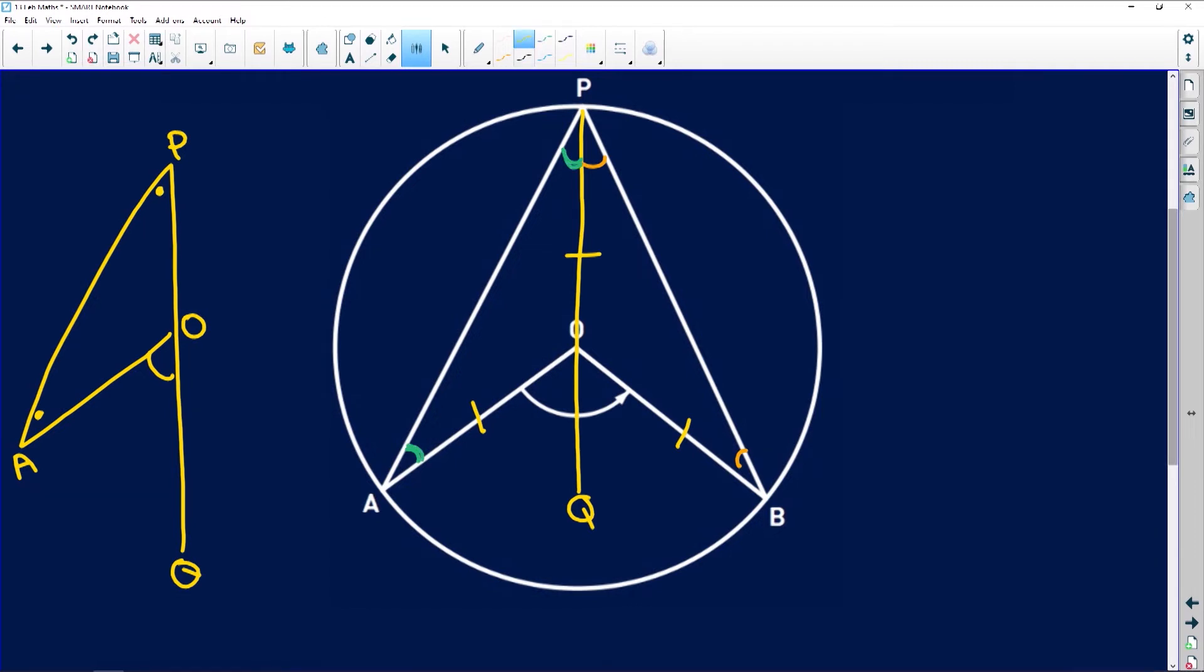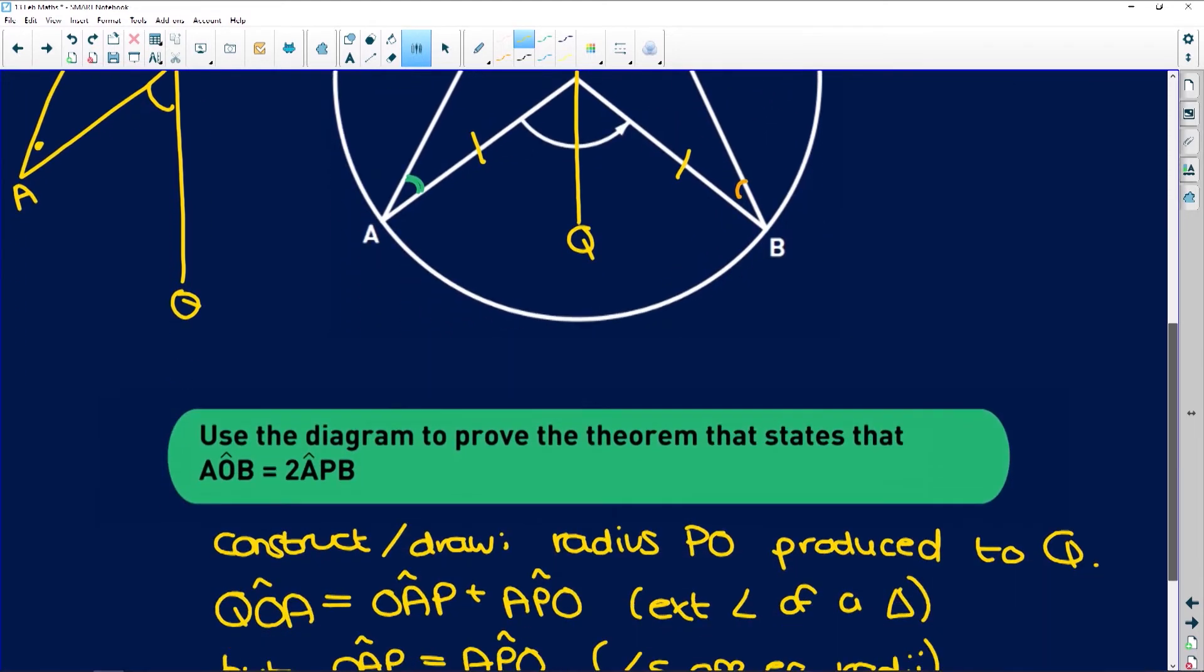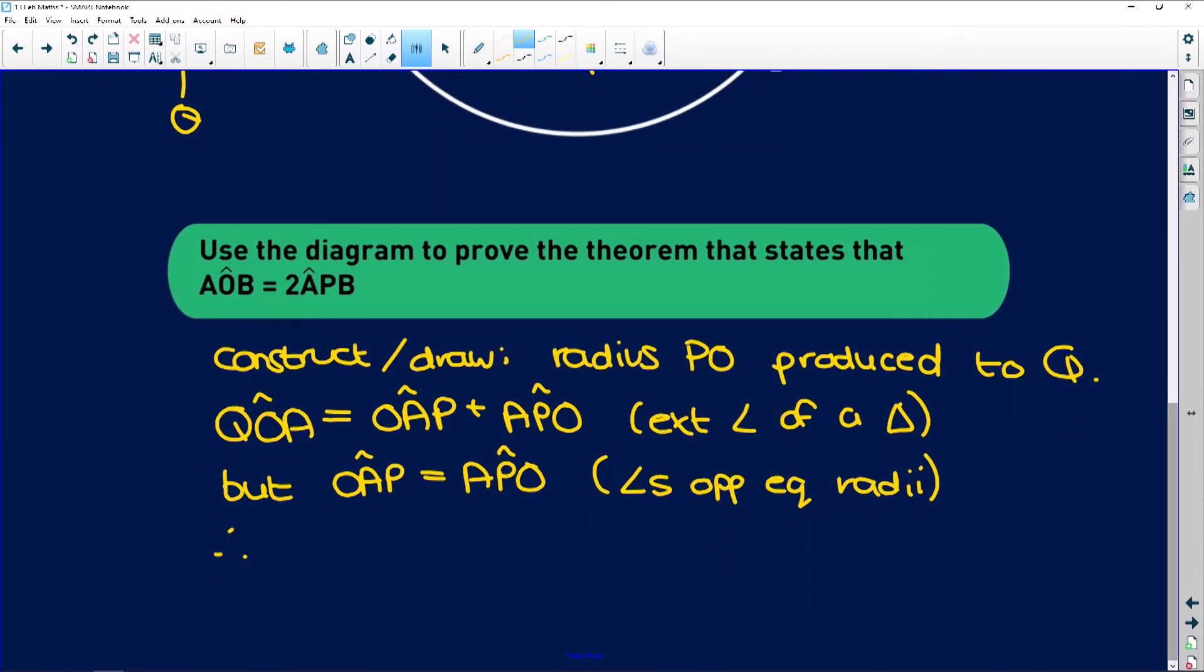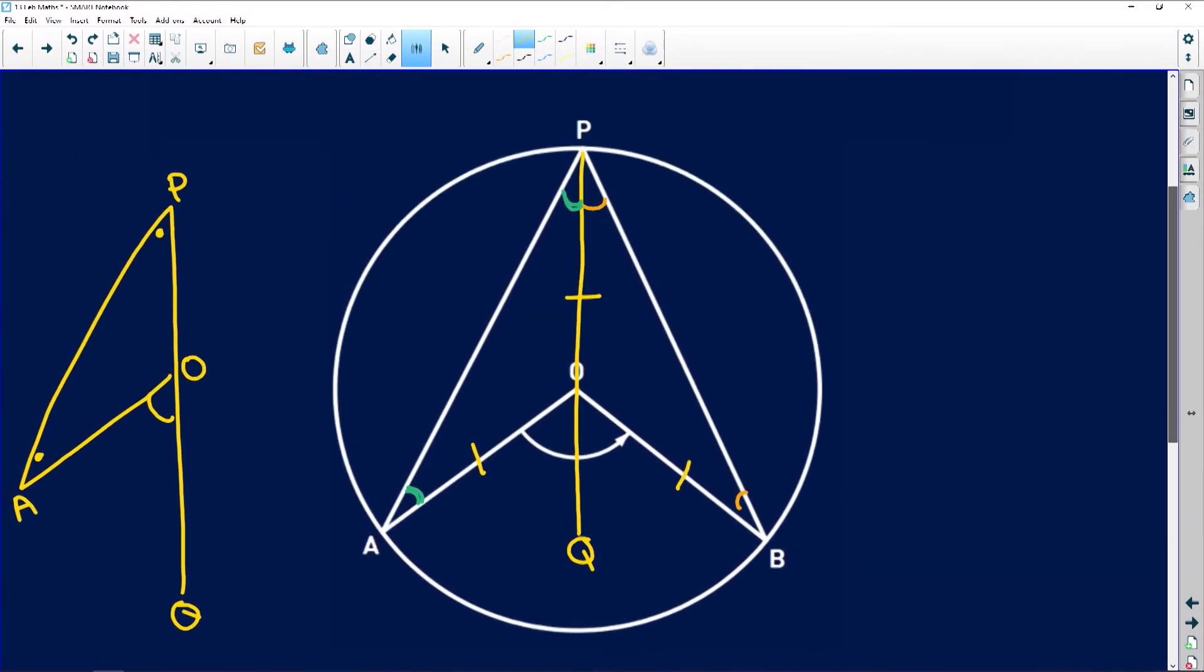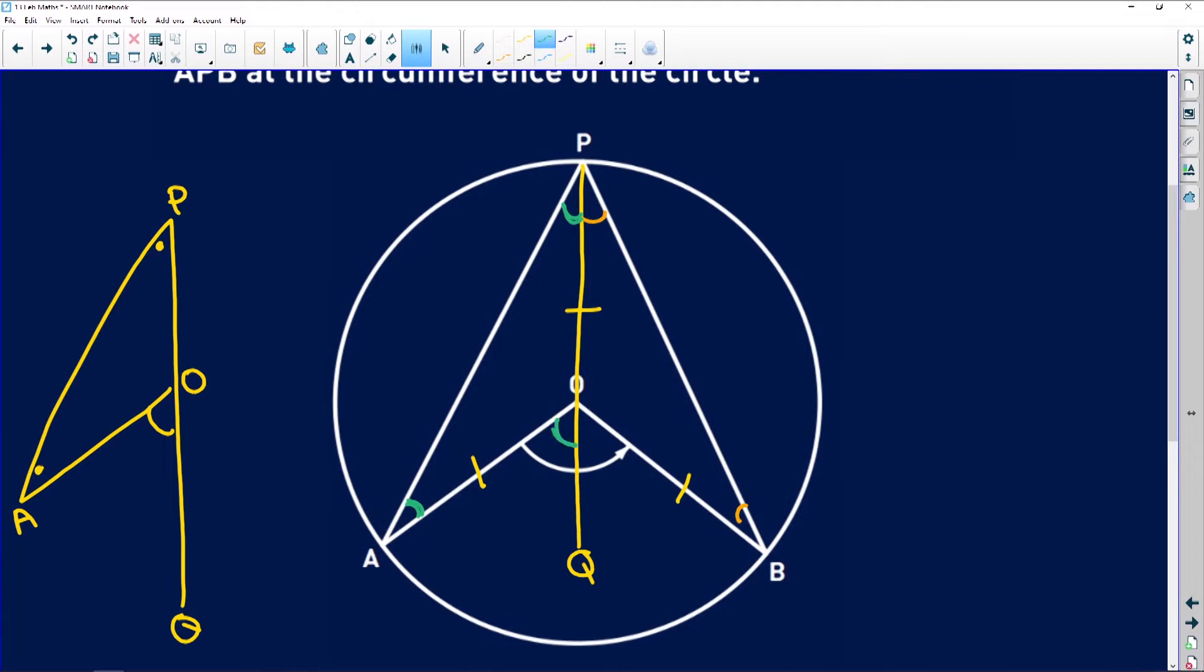Which means that QOA is equal to 2 times APO. So we've established that this angle over here, this exterior angle is equal to 2 times that angle. So now we do the same thing for the left hand side.